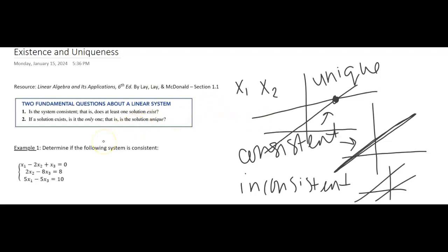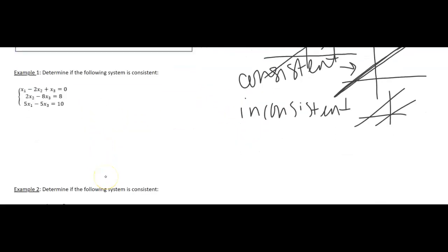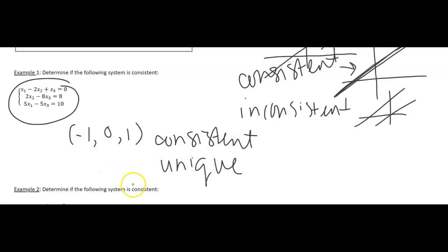This first example here, we ended up getting as a solution, this is the one we just did, negative 1, 0, 1. So this is a consistent system because it has at least one solution. And because it has only one solution, we say that it is unique. So it exists and is unique.